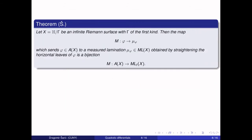The first theorem here says that the map which straightens horizontal foliations places the space of integrable holomorphic quadratic differentials in one-to-one correspondence with the space MLF(X) of measured laminations realizable by proper partial foliations with finite Dirichlet integral.